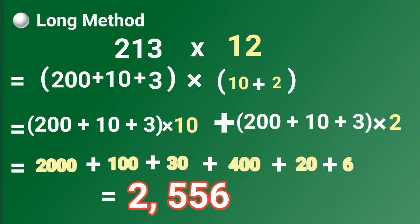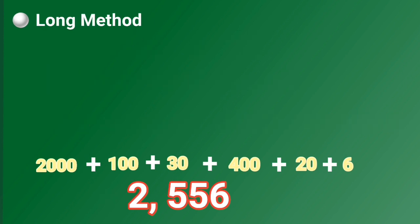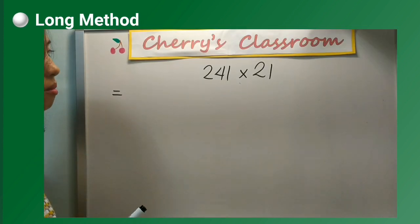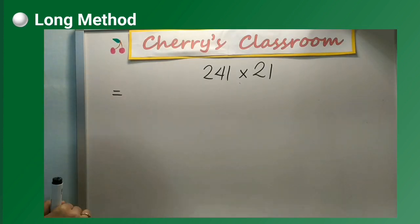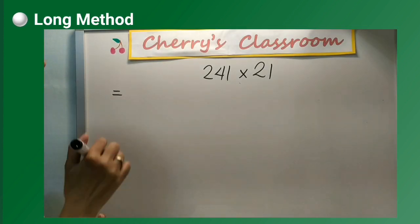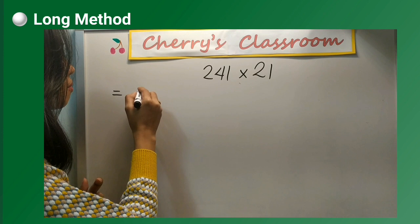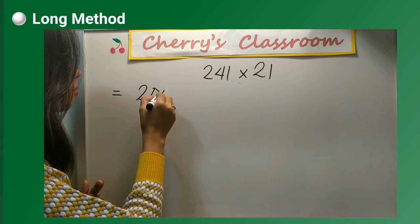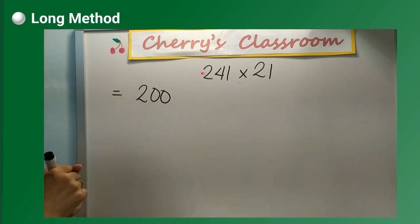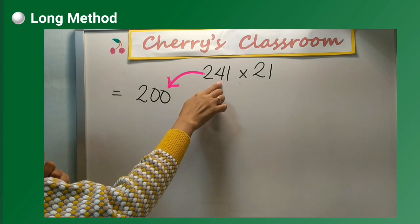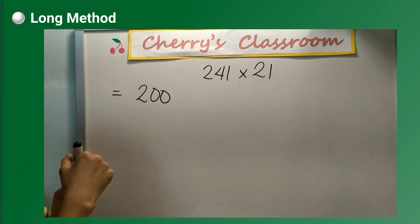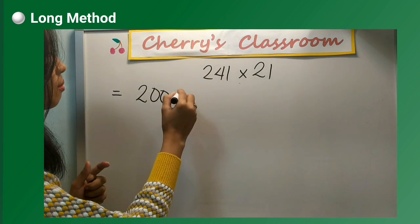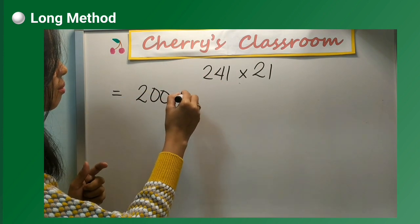Try some more. I will guide you. 241 times 21. Start with writing the expanded form of the multiplicand and the multiplier.